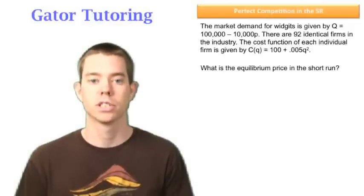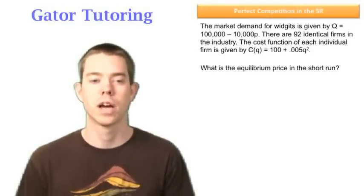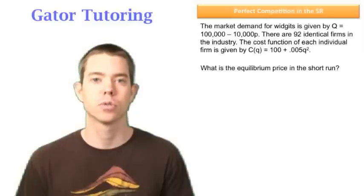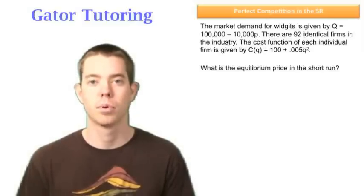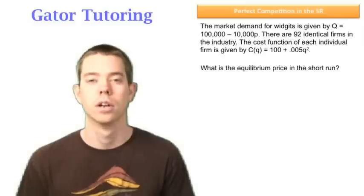The market demand for widgets is given by Q equals 100,000 minus 10,000p. There are 92 identical firms in the industry, and each of the firms have a cost function of 100 plus .005Q squared. The question asks, what is the equilibrium price in the short run?